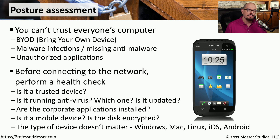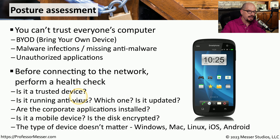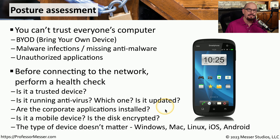From there, we should check different parameters on that device. For example, is the device a trusted device? Many organizations will put a company certificate on that device, which identifies it as one trusted by the organization. We can then look at security utilities like antivirus — is it installed, is it running, and is it updated with the latest signatures? Does this device have all of the corporate applications installed, and are all of those applications up to date with the latest versions?